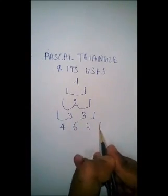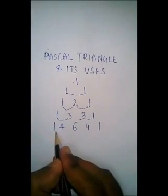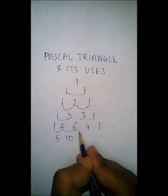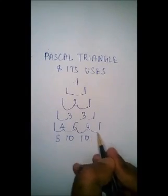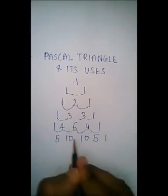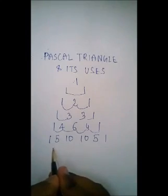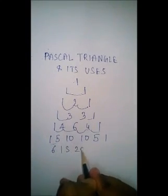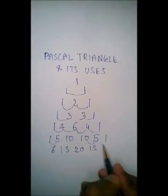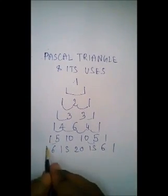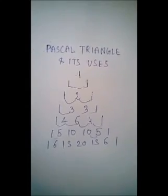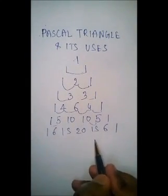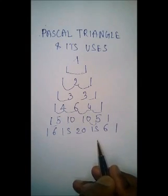Again we add: 3 plus 1 gives 4, 3 plus 3 gives 6, 1 plus 3 gives 4, with 1 on each end — the row 1, 4, 6, 4, 1. Continuing, the next row gives us 1, 5, 10, 10, 5, 1, and then 1, 6, 15, 20, 15, 6, 1. In this triangle, 1 always appears on the left-hand side as well as the right-hand side.